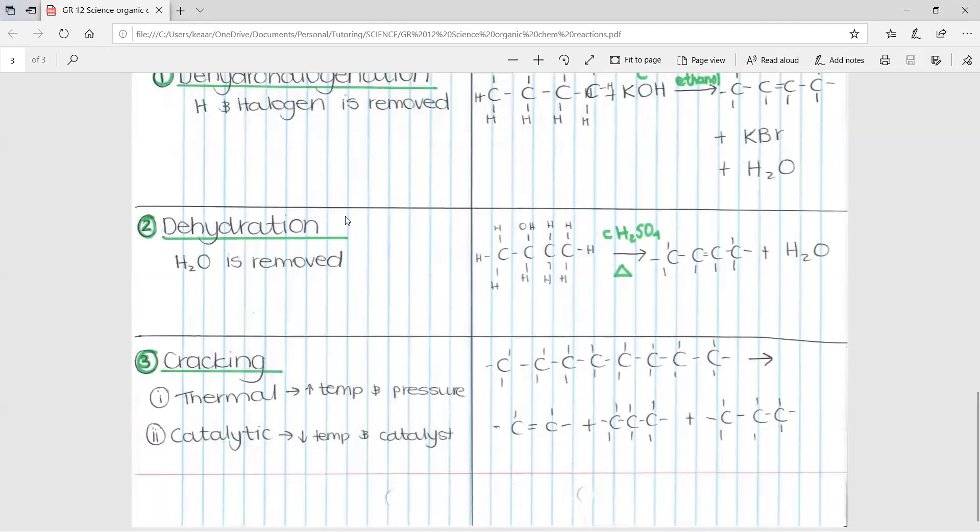Next is dehydration. This is when H2O is removed, so when water is removed. Here we have an example of an alcohol. This OH and this H are going to be removed. Again, the poor becomes poorer. And we are left with an alkene and water. Again, it needs heat and concentrated sulfuric acid.